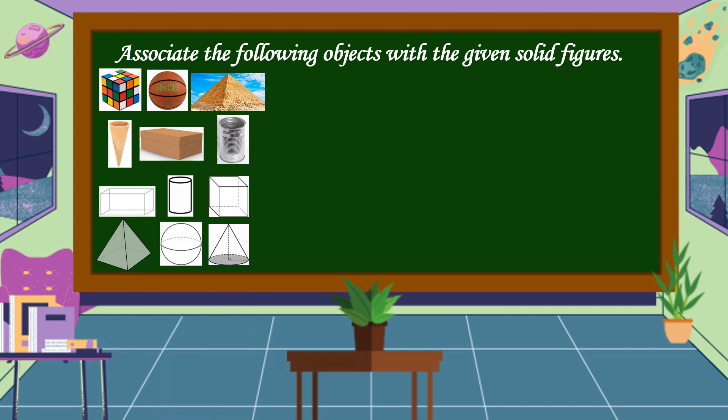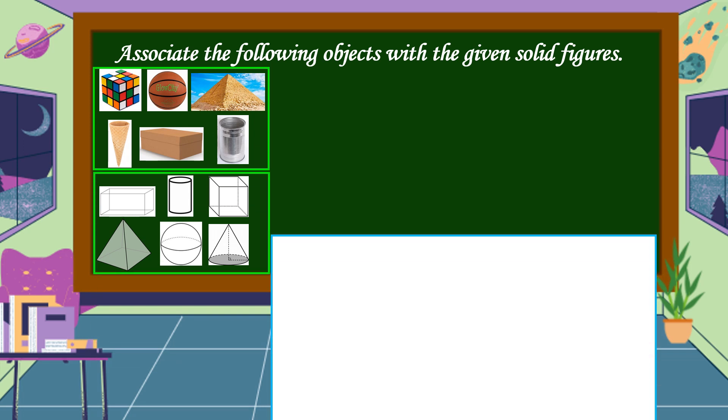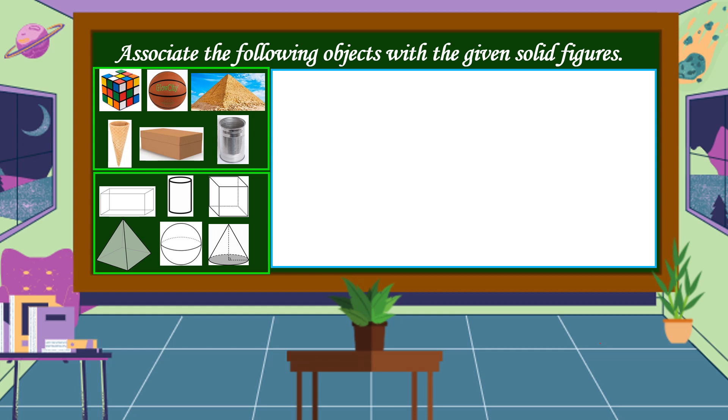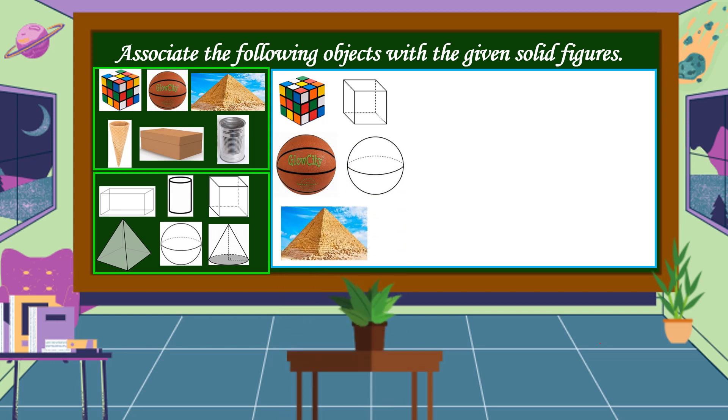Associate the following object with the given solid figures. These are the proper association of the name of the object and the solid shape that corresponds to it. First, a Rubik's cube corresponds to this figure. A ball corresponds to this figure. The Great Pyramid of Giza corresponds to this figure.